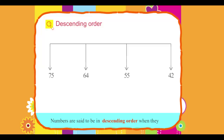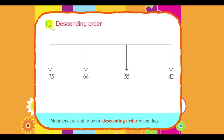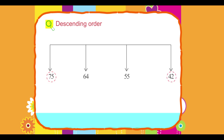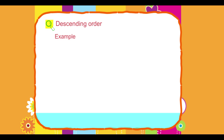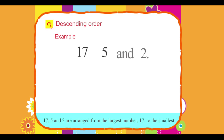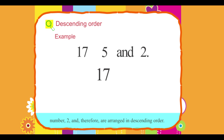Numbers are said to be in descending order when they are arranged from the biggest number to the smallest number. Example: 17, 5, and 2 are arranged from the largest number 17 to the smallest number 2, and therefore are arranged in descending order.